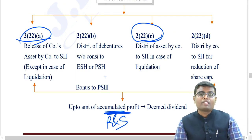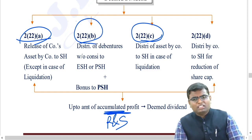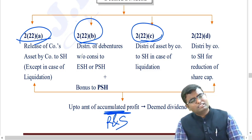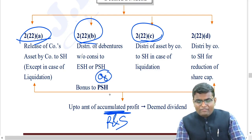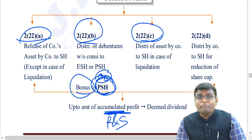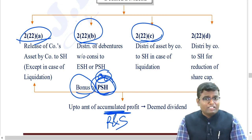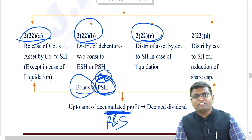Second: whenever a company distributes its debentures without taking any money to equity or preference shareholders, that is deemed dividend for the recipient. Or whenever a company distributes bonus shares to preference shareholders - for preference shareholders it will be treated as deemed dividend. Point to be noted: if bonus is given to equity shareholders, it is not deemed dividend; if given to preference shareholders, it is deemed dividend.